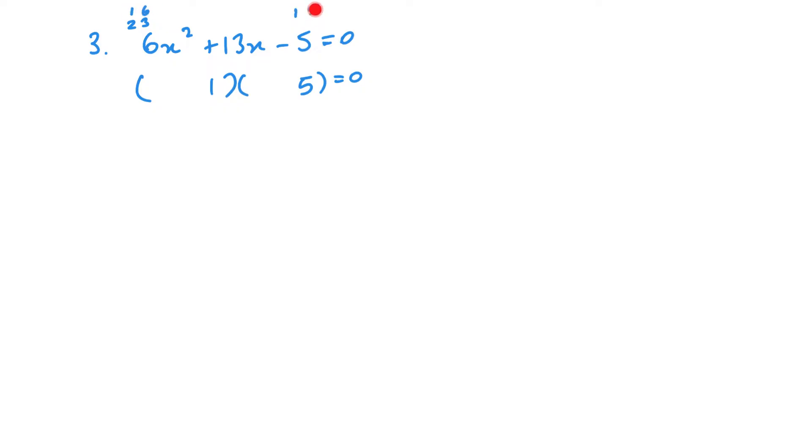Looking for combinations that would give me that positive 13 in the middle. The 1 and 6 and 1 and 5, multiplying these I could get 1 and 30, that's not going to give me 13. Or 5 and 6, that's not going to give me 13. 2 and 15, that will give me the 13. So 2 times 1 and 3 times 5. I want the 3 times 5 to be positive and the 2 times 1 to be negative.